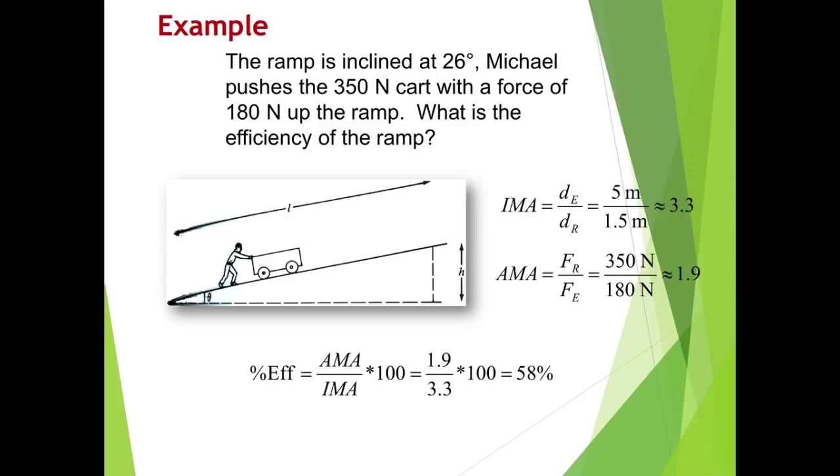In the second part of this example, we're going to find the AMA and the percent efficiency. So the ramp is inclined to 26 degrees. Michael pushes the 350 newton cart with a force of 180 newtons up the ramp. What is the efficiency of the ramp? Well, I'm going to be using this equation here. Percent efficiency equals AMA divided by IMA times 100. I've already got IMA from the slide before. And I found it was approximately 3.3.